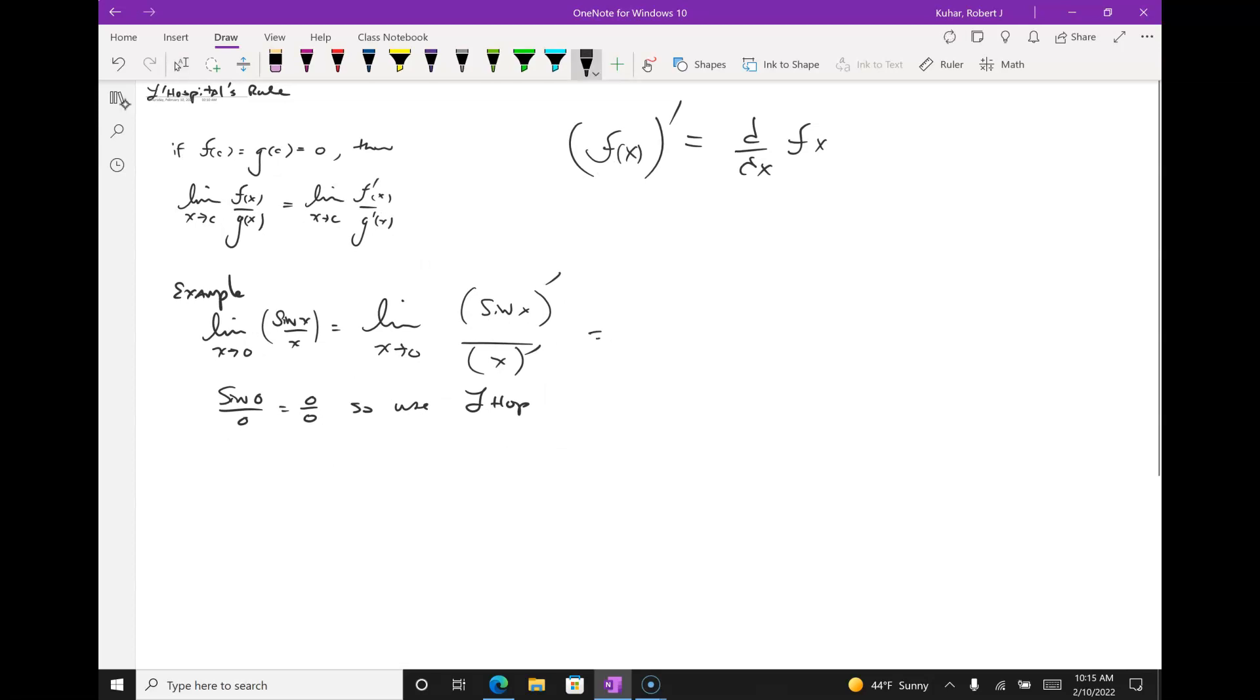So, what do I get? What's the derivative of sine? Cosine. Notice I'm still writing my limit piece because I'm just changing my functions now. What's the derivative of x? One. And now I can just plug into cosine. I know cos of zero is one.